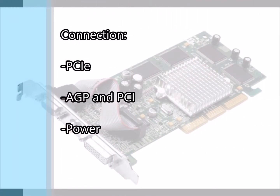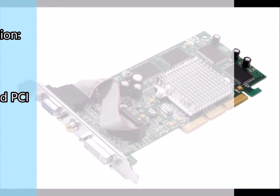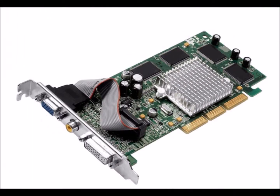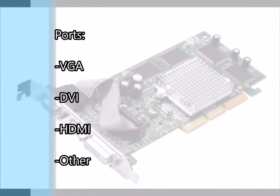The third part of a graphics card is the connection. Graphics cards today often use a PCI Express connection, but older graphics cards may use an AGP or regular PCI connection. The connection to a motherboard doesn't always provide enough power for a graphics card, so some may have a six-pin connector on the top or side for direct connection to the power supply.